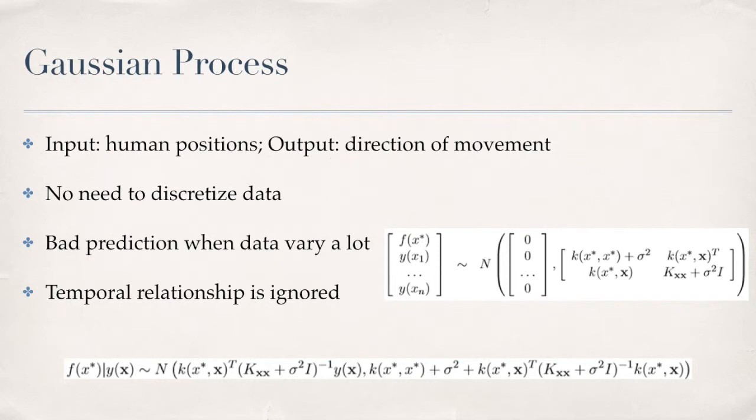With the Gaussian process, we don't need to convert positions into grid locations. But the prediction can be bad if the data vary a lot. Also, the temporal relationships between the data points on the same trajectory are ignored.